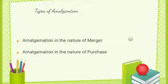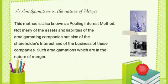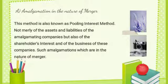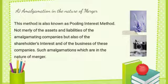Types of amalgamation: amalgamation in the nature of merger, and amalgamation in the nature of purchase. Amalgamation falls into two broad categories. Amalgamation in the nature of merger — this method is also known as the pooling of interest method. It involves not merely the assets and liabilities of the amalgamating companies, but also the shareholders' interest and the business of these companies.